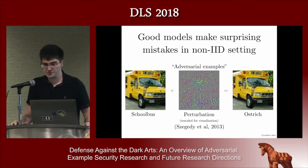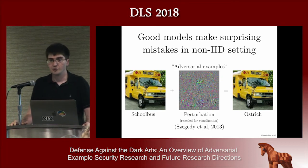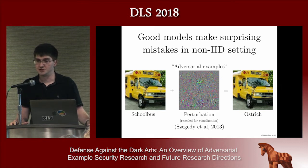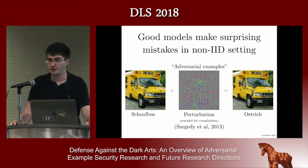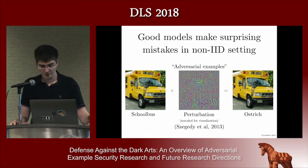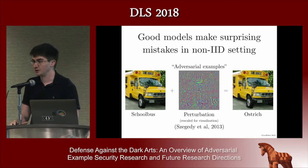As we've started to study the performance of machine learning models in the non-IID setting, we found that they make very surprising mistakes. The first time we really noticed this in the deep learning community was when Christian Szegedy started studying how convolutional networks make classification decisions. He thought he would start with a clean image, modify it by following the gradient of the probability of another class until the class changed, and was expecting that if you tried to turn a school bus into an ostrich, maybe the school bus would grow feathers.